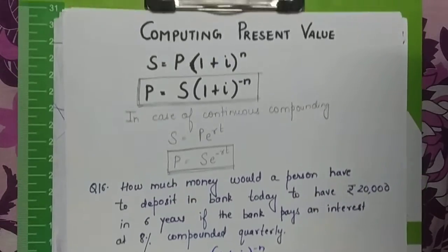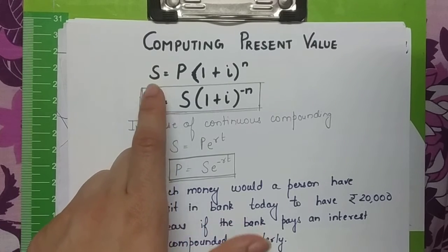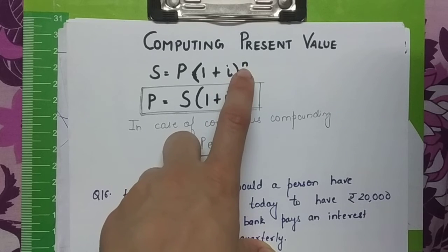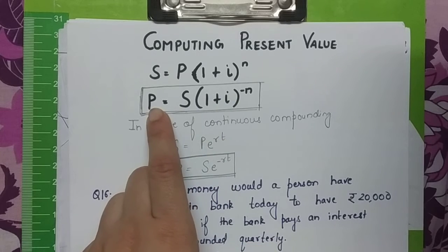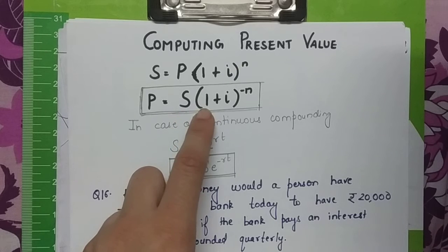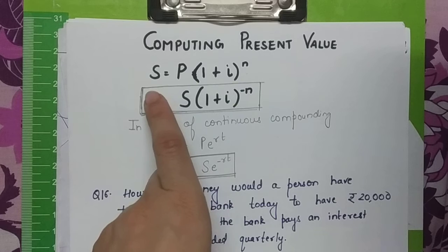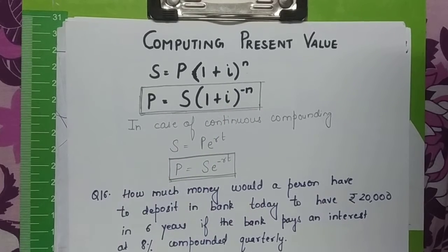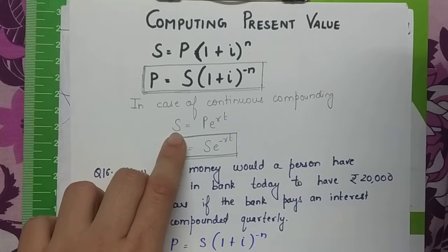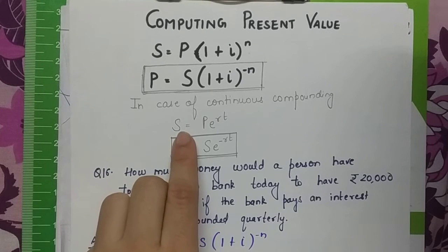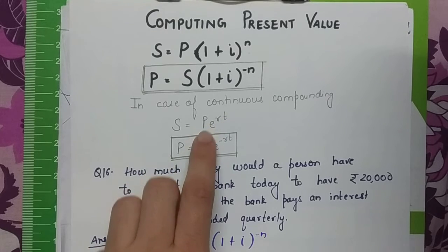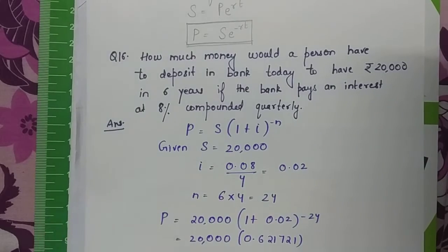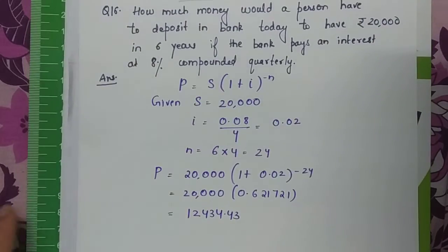The last topic in this video is computing present value. Since the future amount formula is S = P × (1 + i)^n, where i = r/m and n = m × t, we can rearrange to get: P = S × (1 + i)^(−n). For continuous compounding, S = P × e^(rt), so the present value is P = S × e^(−rt).